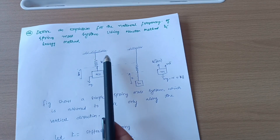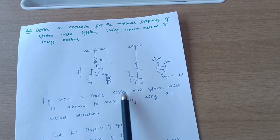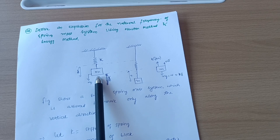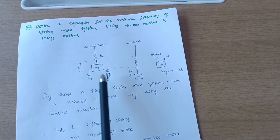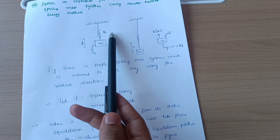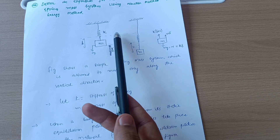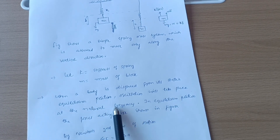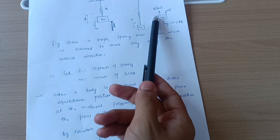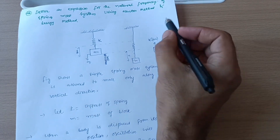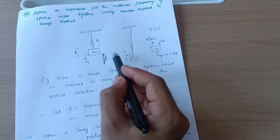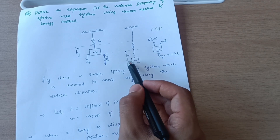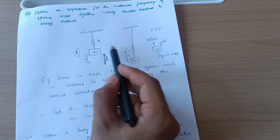We have to derive the expression by two methods. This is the spring-mass system — spring plus mass. The figure shows a simple spring-mass system which is assumed to move only along the vertical direction. Whenever you attach the mass m with the spring, it will automatically move downwards. The stiffness of the spring is k, m is the mass of the block. The displacement is denoted by x and the static deflection of the spring is denoted by delta.